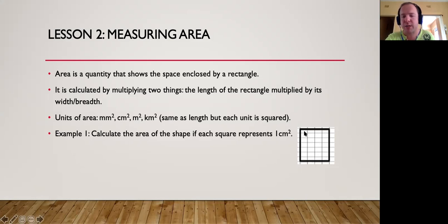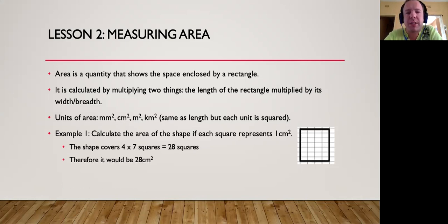You can actually work it out by saying right, there are four squares in a row, there are seven rows, which means there should be four times seven rectangles within that rectangle, and it is 28 squares, therefore there would be an area of 28 centimeters squared.